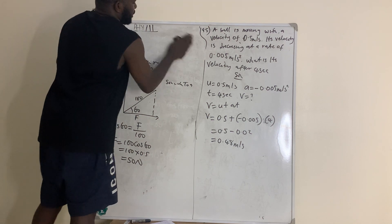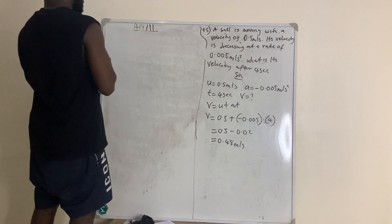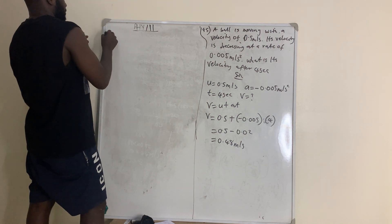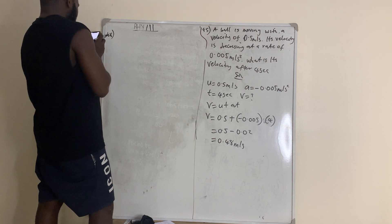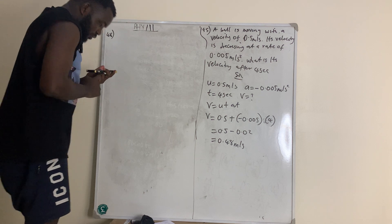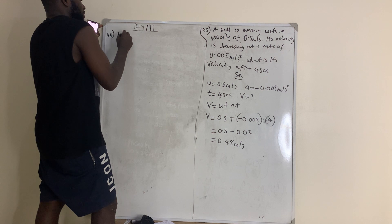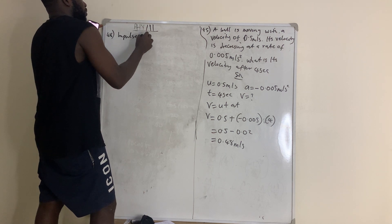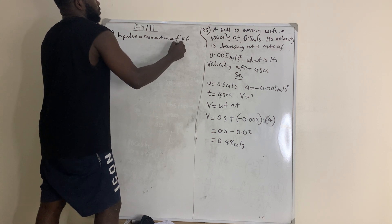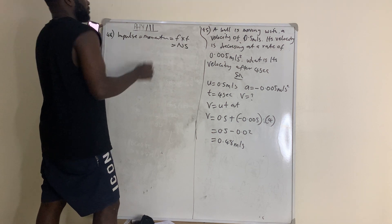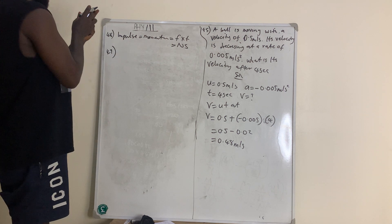Question number 48 says: the SI unit of momentum is what? Momentum relates to impulse: impulse equals force times time. Force is measured in newtons, so impulse and momentum are measured in newton-seconds. Therefore the SI unit of momentum is newton-second.